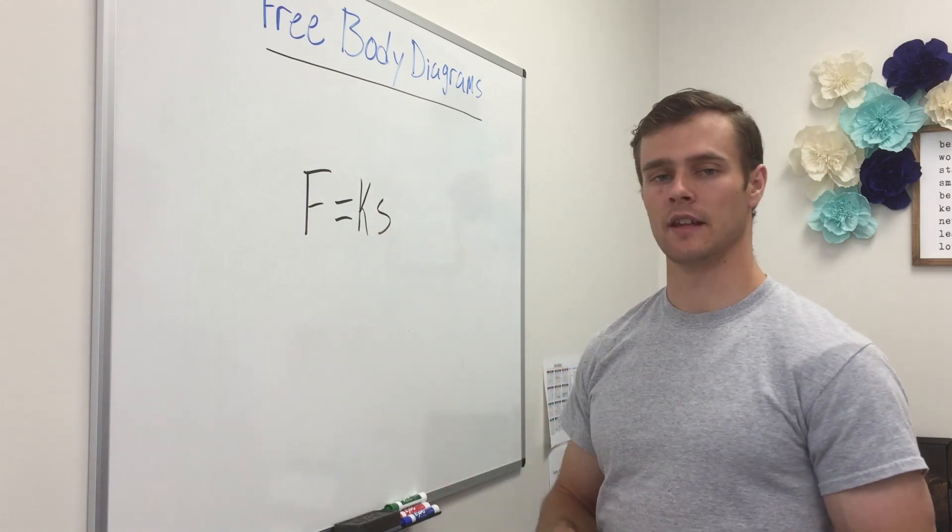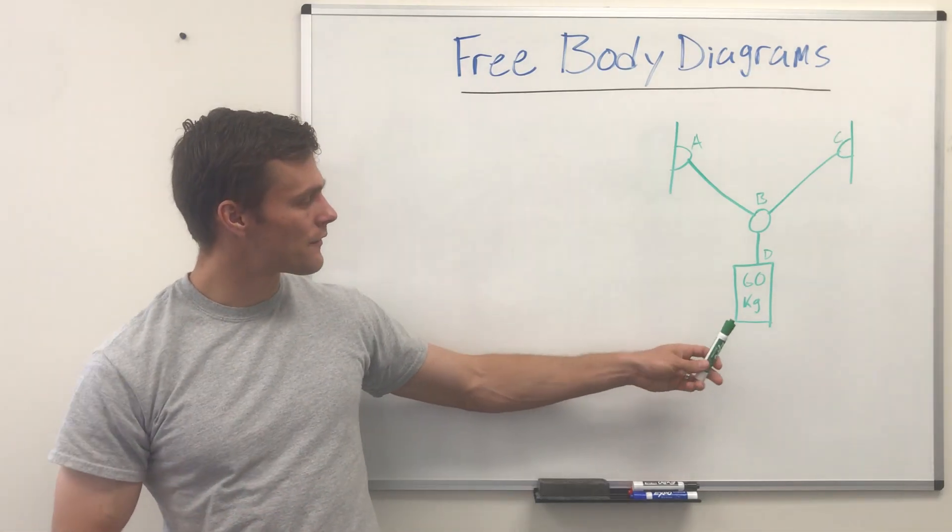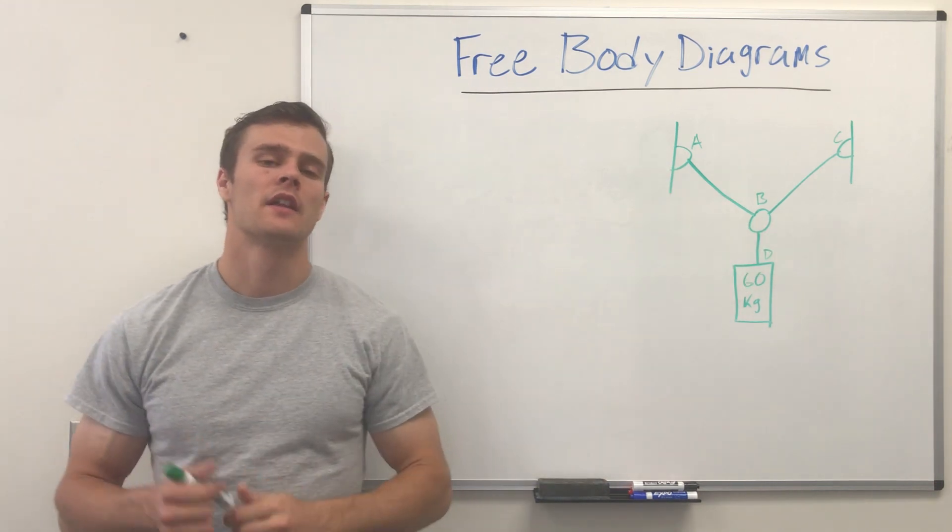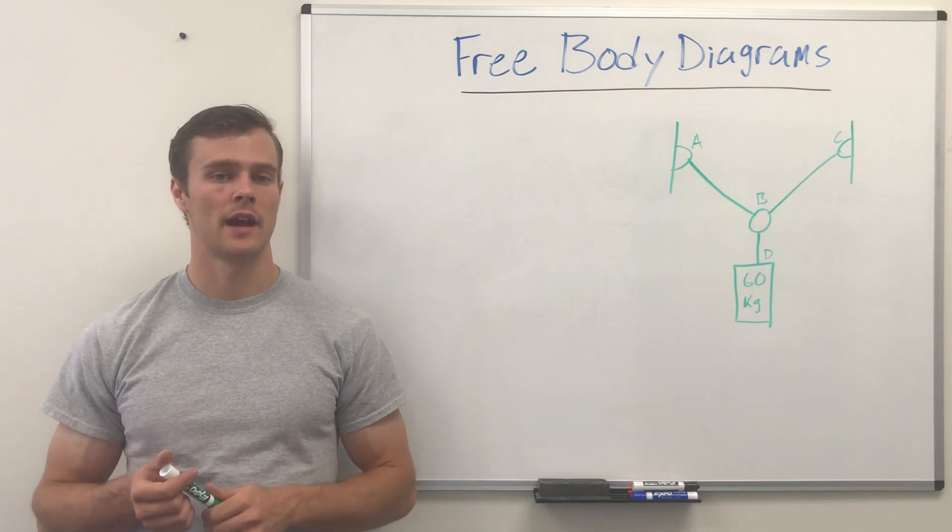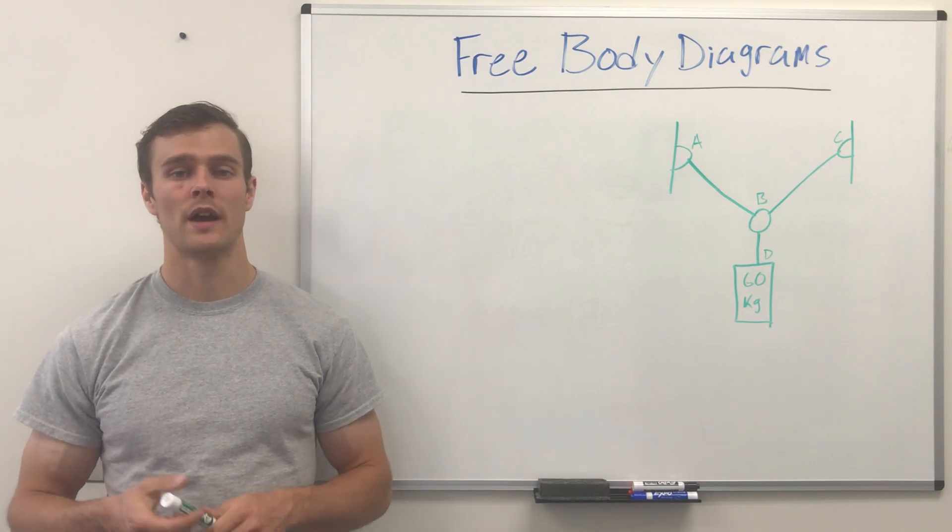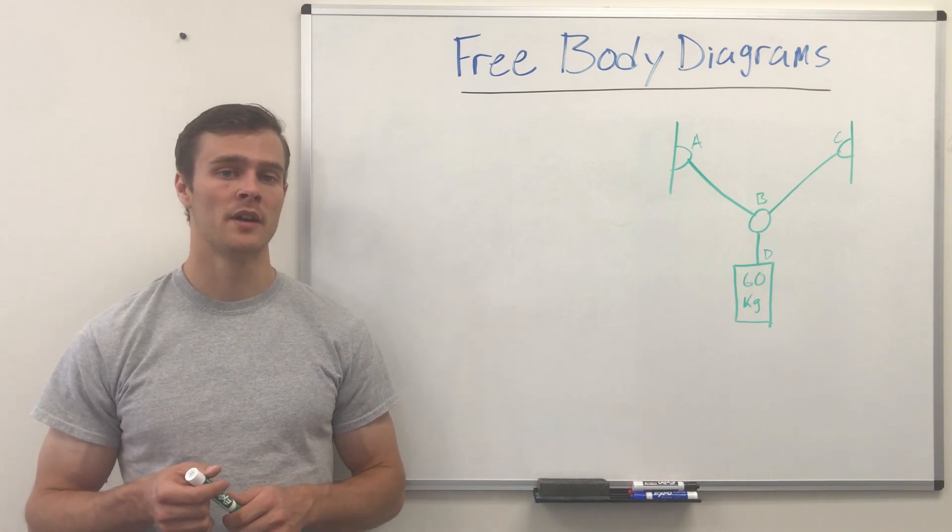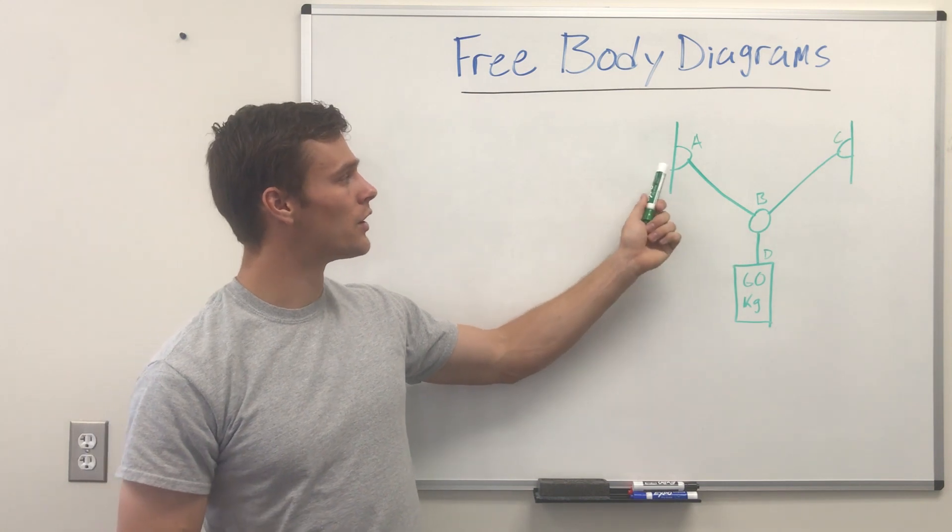All right let's say we have this situation where we have a weight hanging from a ring that is suspended by two ropes hanging from the wall. So if we want to draw a free body diagram of this situation we have lots of options because really we can draw a free body diagram of any part of this. We could draw of the weight, we could draw of the ring, we could draw of the hooks on the walls, we could draw of the ropes themselves.